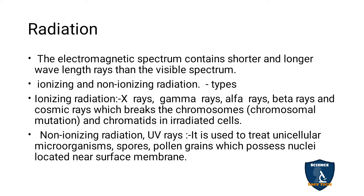Ionizing rays affect the chromosomes and chromatids and induce chromosomal mutation. Non-ionizing radiation includes UV rays, which affect unicellular microorganisms, spore formation, and pollen grain germination. UV rays affect nuclei present near the plasma membrane, causing mutation in the organism.